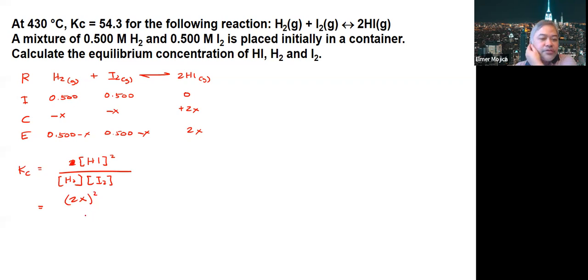This is 2X squared over (0.5 minus X) times (0.5 minus X).